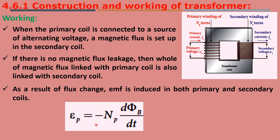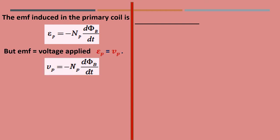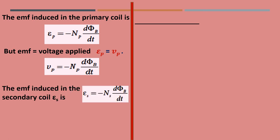The EMF induced in the primary coil is Ep, which equals minus Np dΦ/dt. Since the applied voltage equals the induced EMF, Ep equals Vp, so we can write Vp = −Np dΦb/dt. The induced EMF in the secondary coil is Es = −Ns dΦb/dt, and if Es equals Vs, then Vs = −Ns dΦb/dt.